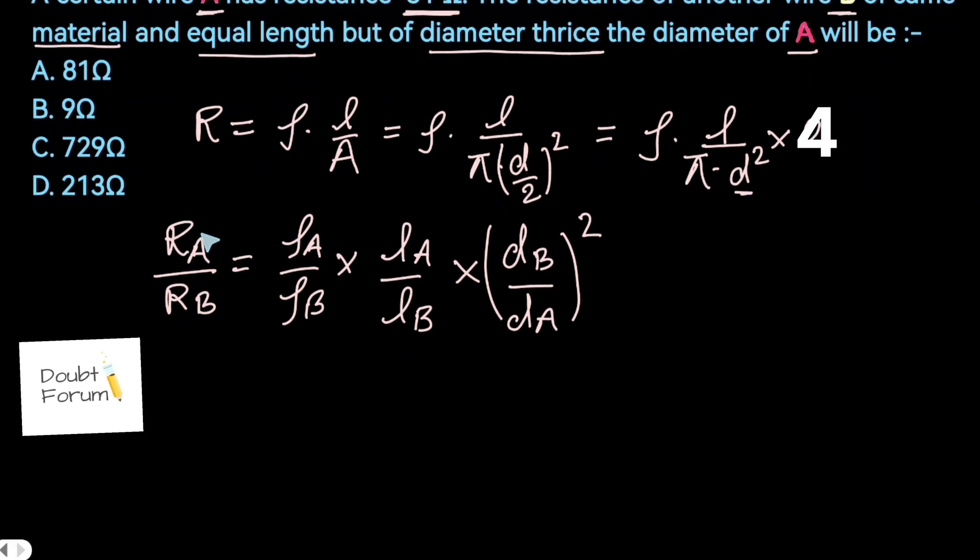So from here the value of resistance for wire A is given to us as 81. The value of resistance of wire B we have to find out. In the question it is given that both the wires are made up of same material, so this rho_A upon rho_B would cancel each other. The length of wire A and wire B is also equal, so this would also cancel.